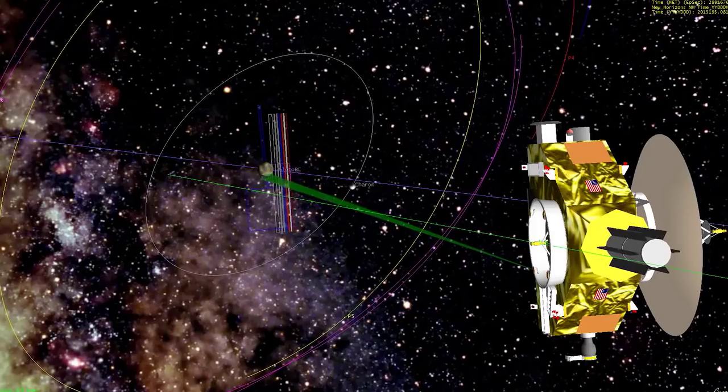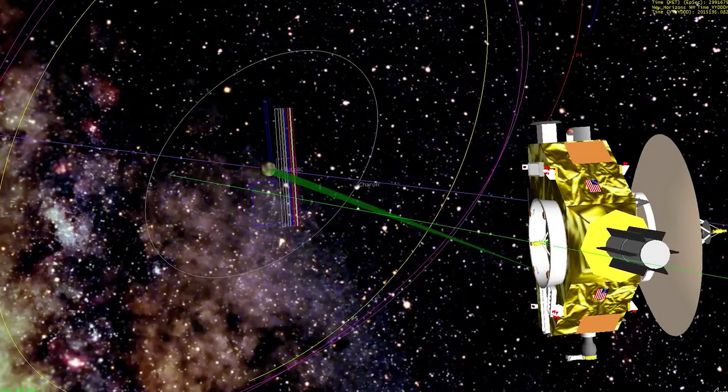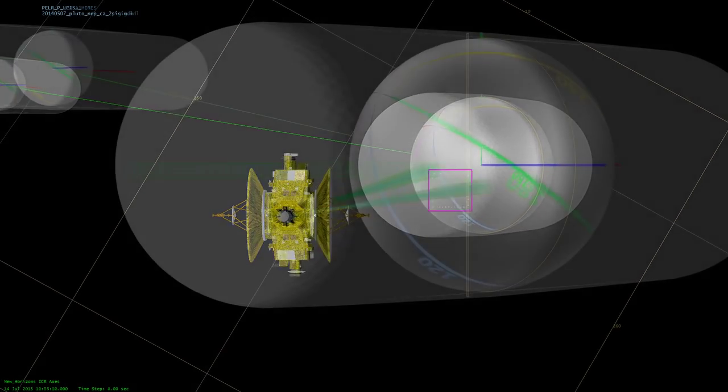So we take our LORRI images one after the other, these overlapping images. So what it looks like is this big plate of Pluto and the skinny little noodle of LORRI running across.